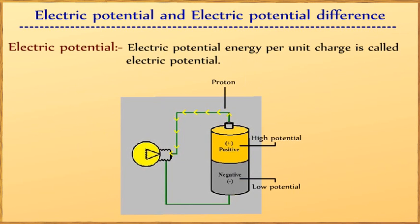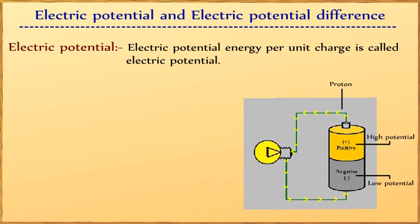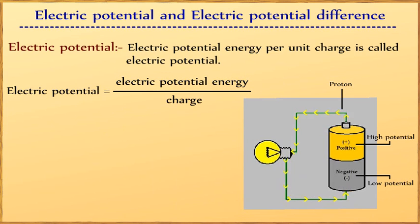Electric potential: electric potential energy per unit charge is called electric potential. That is, electric potential = electric potential energy/charge.